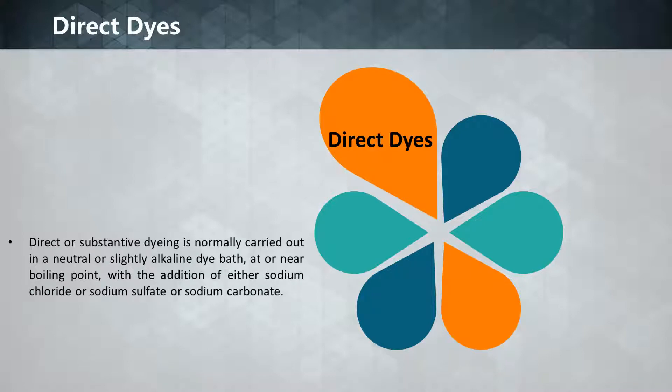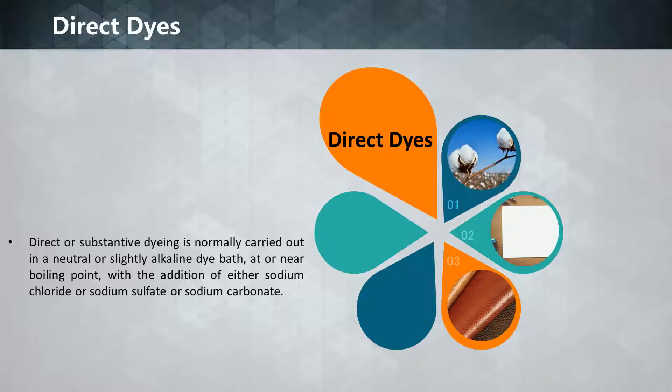Direct or substantive dyeing is normally carried out in a neutral or slightly alkaline dye bath, at or near boiling point, with the addition of either sodium chloride or sodium sulfate or sodium carbonate. Direct dyes are used on cotton, paper, leather. They are also used as pH indicators and as biological stains.